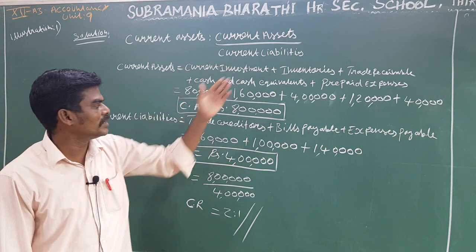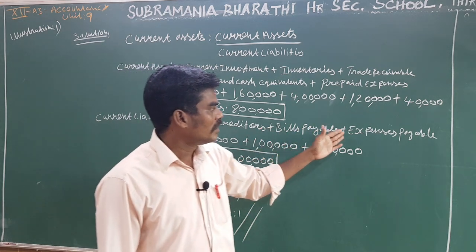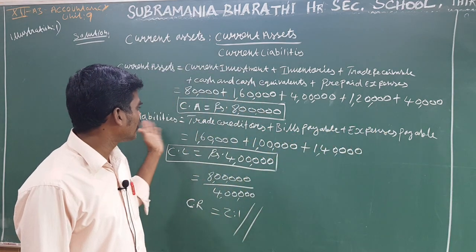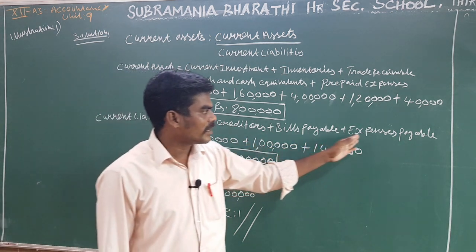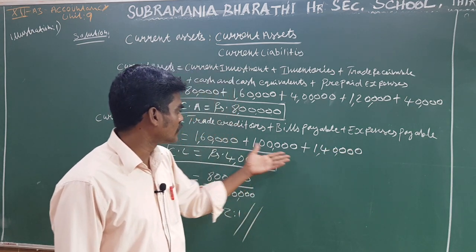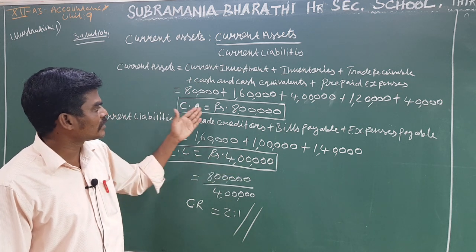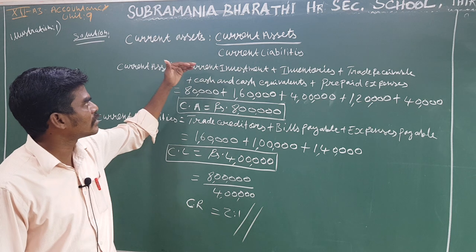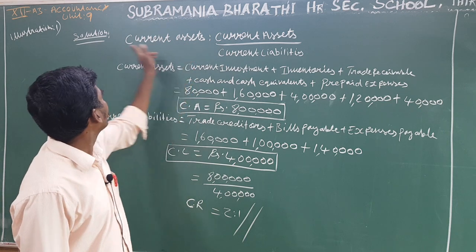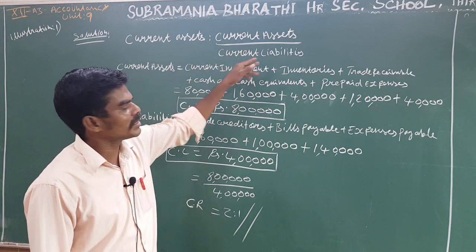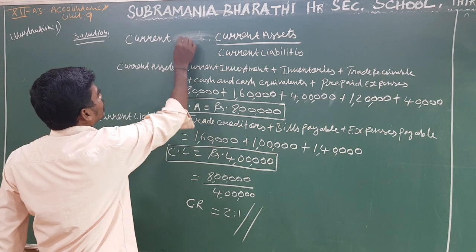Next, current liabilities equal trade creditors plus bills payable plus expense payable. Trade creditors: 1,60,000; bills payable: 1,00,000; expense payable: 1,60,000. Total current liabilities equal 4,00,000.